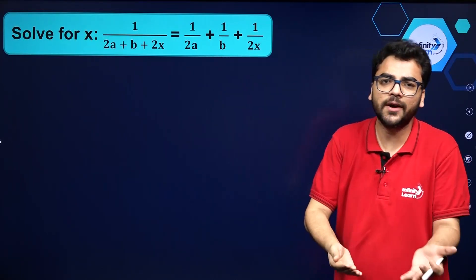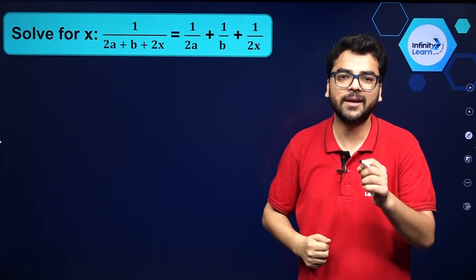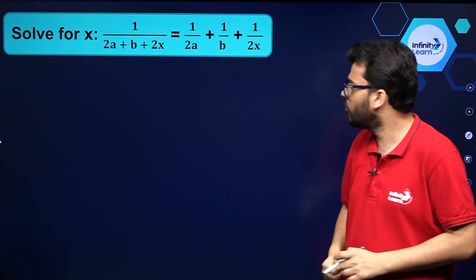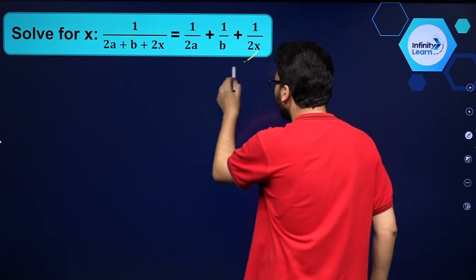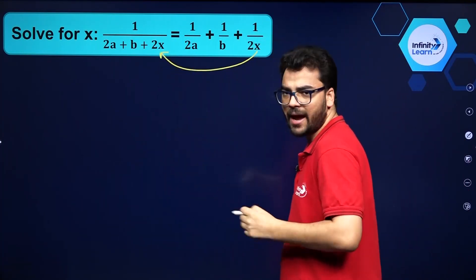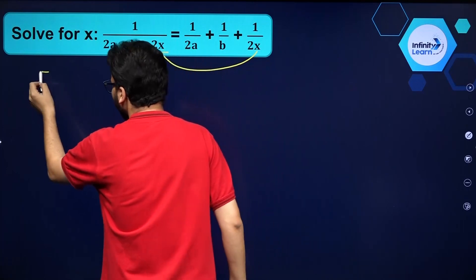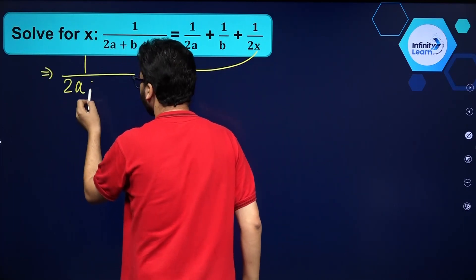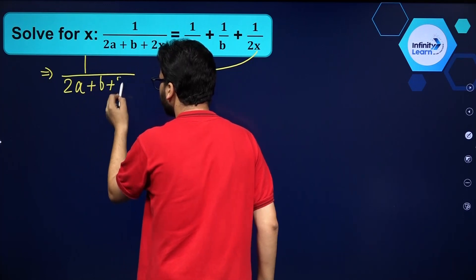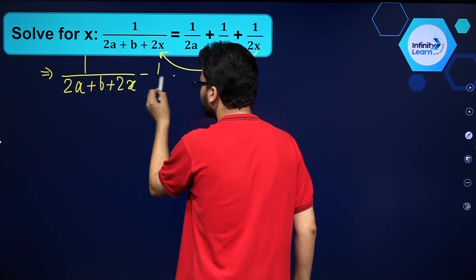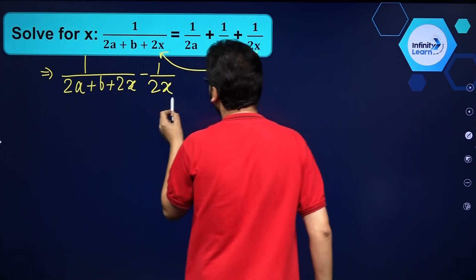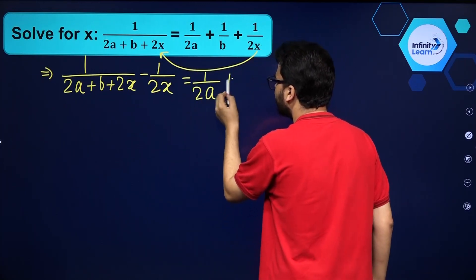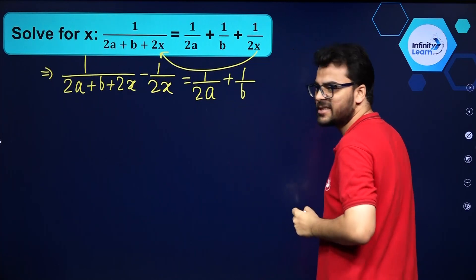The basic method would be to take LCM on the right hand side, but that would be a wastage of time. The simpler logic here is to take the variable on the left hand side and subtract. If you simplify like that you'll be able to do it quickly. You see this is 2a plus b plus 2x, and minus 1 by 2x, and that is equal to 1 by 2a plus 1 by b.